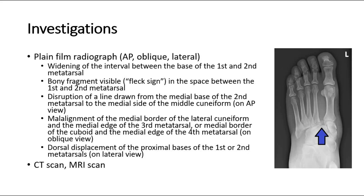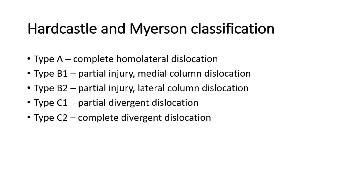Other imaging tests include CT scan and MRI scan. For classification, the Hardcastle and Meyerson classification can be used. Type A is complete homolateral dislocation. Type B1 is partial injury, medial column dislocation. Type B2 is partial injury, lateral column dislocation. Type C1 is partial divergent dislocation. Type C2 is complete divergent dislocation.